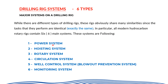The six systems are: number one, power system; number two, hoisting system; number three, rotary system; number four, circulation system; number five, well control system — that is, the blowout preventer system; and number six, monitoring system. The monitoring system has been brought into practice about eight or nine years ago; before that, this system was not in practice.